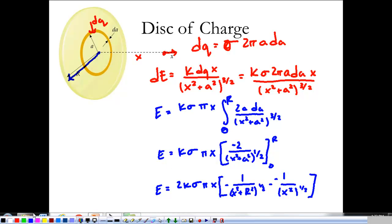So to simplify things and finalize my electric field, the electric field is 2K·σ·π·X times [1/X - 1/√(X² + R²)]. That's tricky, but that's what we're after.